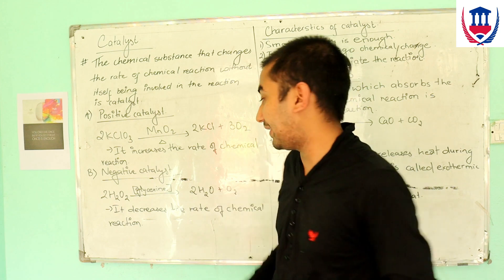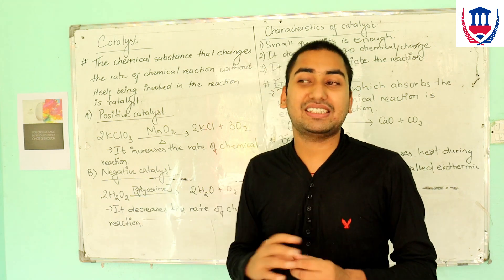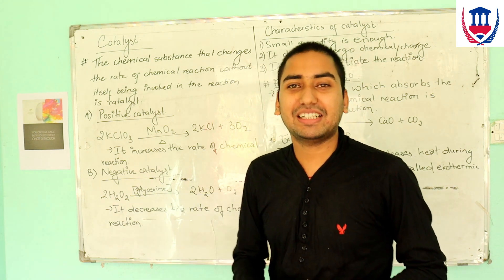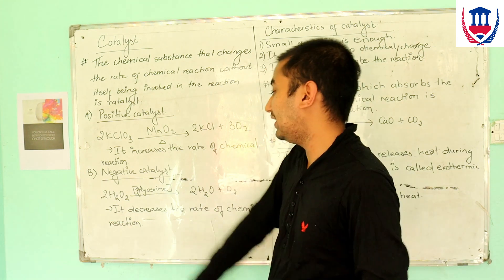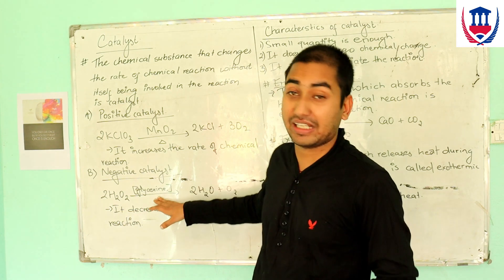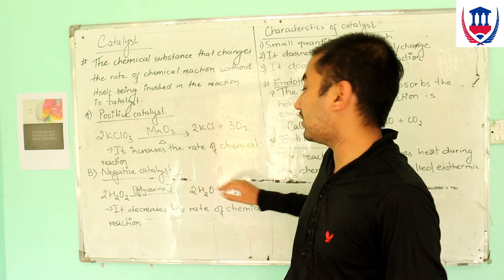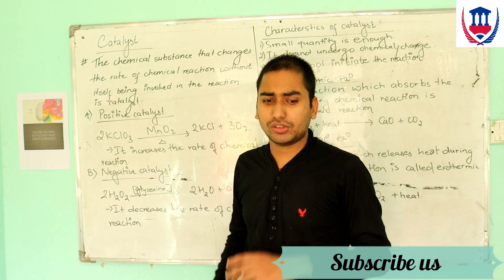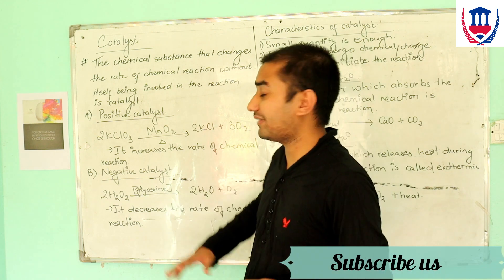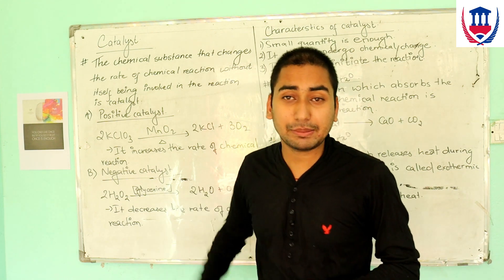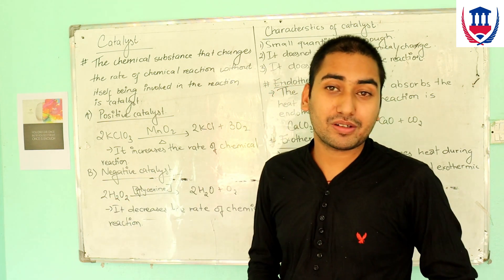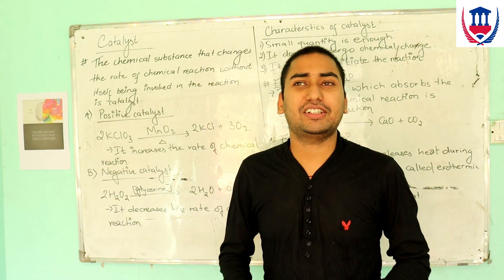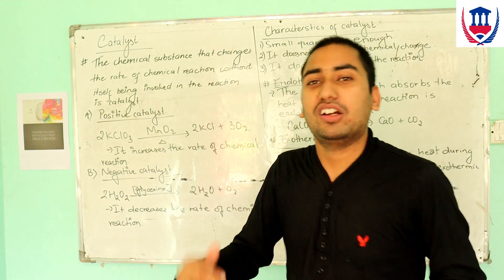An example of negative catalyst is glycerine. The reaction is 2H2O2 hydrogen peroxide with glycerine produces 2H2O and O2. This is a negative catalyst which decreases the rate of reaction.